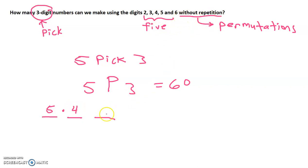Because there's no repetition, by the time we get to the third digit, there are only three numbers to choose from.